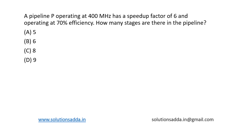This is a question from computer organization. A pipeline P operating at 400 MHz has a speedup factor of 6 and is operating at 70% efficiency. How many stages are there in the pipeline?